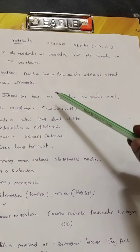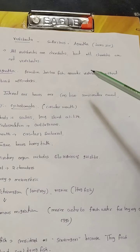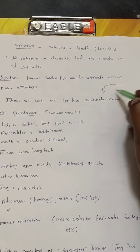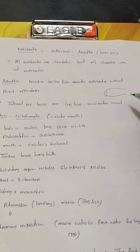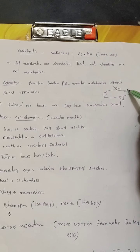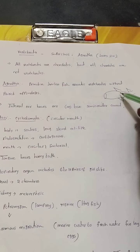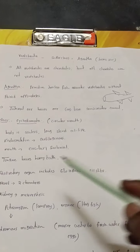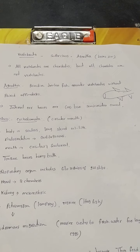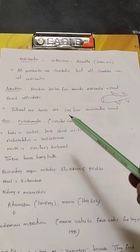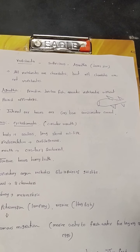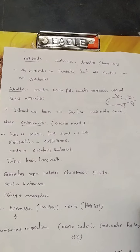The first super class, Agnatha, consists of primitive jawless fishes. These are aquatic vertebrates without paired appendages and without paired fins. In the internal ear, Agnatha have only one or two semi-circular canals, whereas mammals have three semi-circular canals. The semi-circular canal maintains the balance of the body.